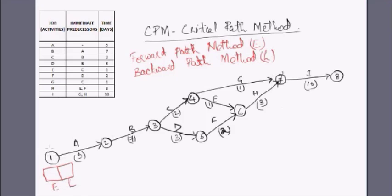The nodes are instantaneous moments of time — they are events. At the first node we start at time zero. Moving forward to node 2, we complete activity A on day 5, so the earliest occurrence at node 2 is 5. Moving to node 3, it is 5 days plus 7 days for activity B, giving day 12. On the twelfth day we would have completed activity B and be ready to take up activities C and D.